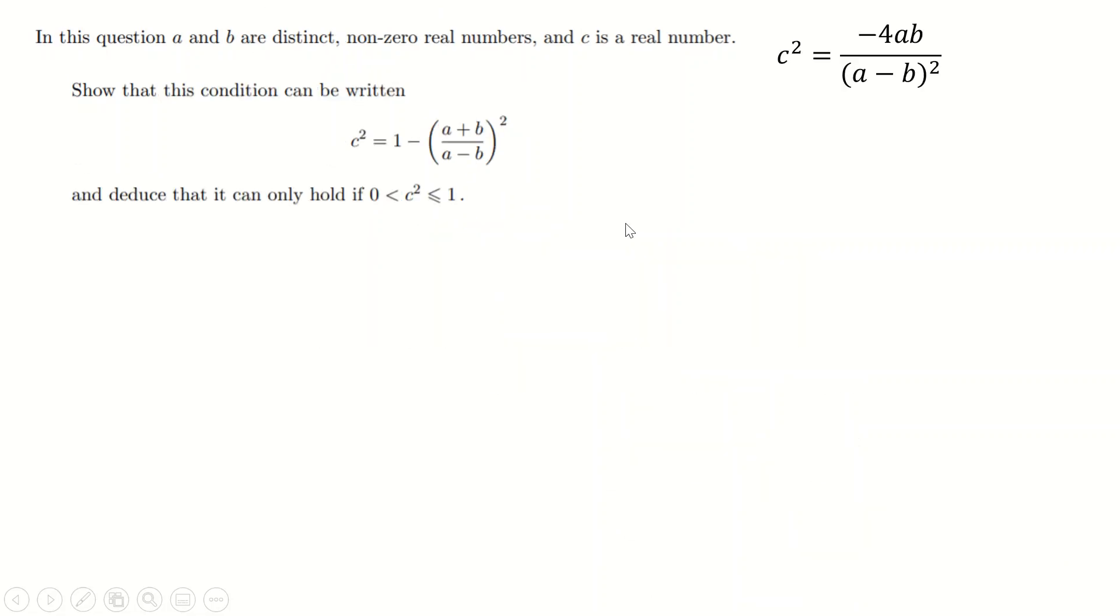Part c, or whatever part this is - show that this condition, so that's the condition I just found, can be written as this. Now, you have a few options for how to do a question like this, and you have one thing that you definitely can't do. The thing you definitely can't do is just look at this and go, 'oh, c² is that, c² is that, therefore the two things are equal,' and try to work from there. Please don't do that, because this is the thing you're trying to show. You're trying to show that this is the same as this. You can't just take it for granted, because then you're using circular logic - you're starting at the end. You need to show that this can be written as this, not just immediately assume that they can.